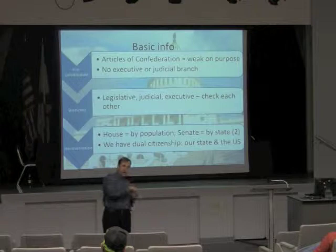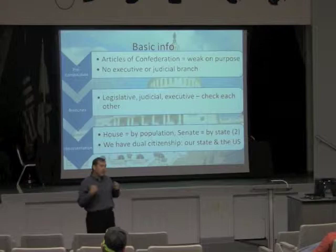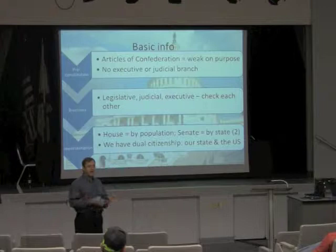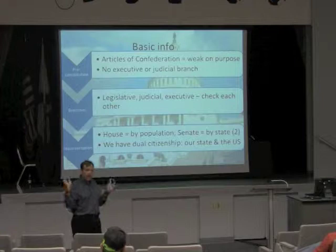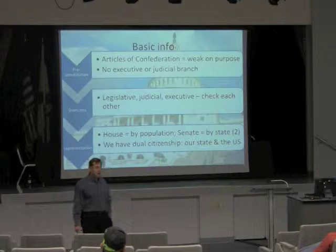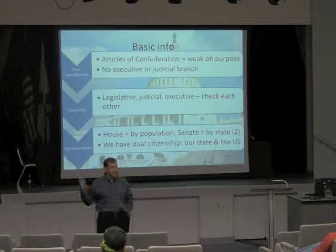Nobody was really in charge. There was also no executive — no president. They were very fearful of having a king-like figure who runs things and punishes people. So any kind of executive was seen as bad. The idea was that Congress would pass a law and you'd just do it because it was law, but nobody was going to make you. There was also no judicial branch — no federal court system — because all the states had courts. But then what happens if there's an issue involving more than one state?